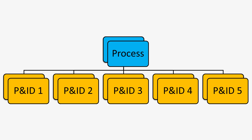Generally, P&IDs are divided into multiple drawings because it is impossible to include all the information of a particular process cycle in one P&ID. So P&IDs are generally given with preceding and succeeding sheet continuations. Now let's see what information is available in P&ID.